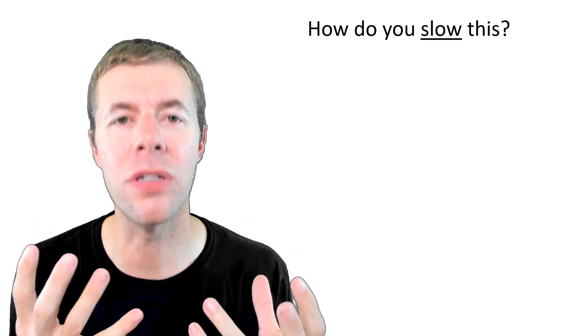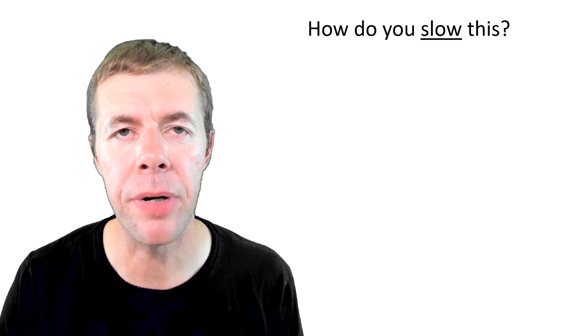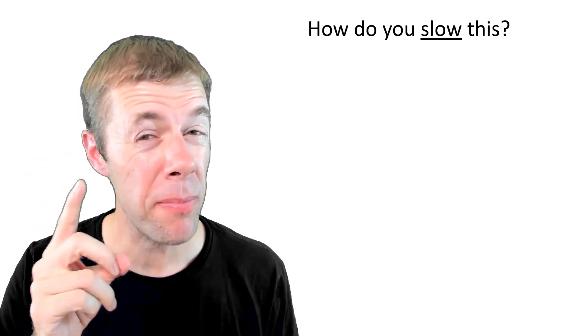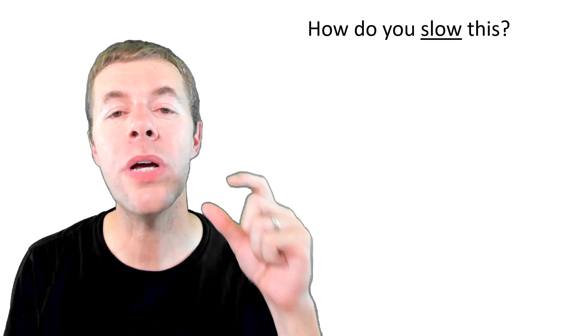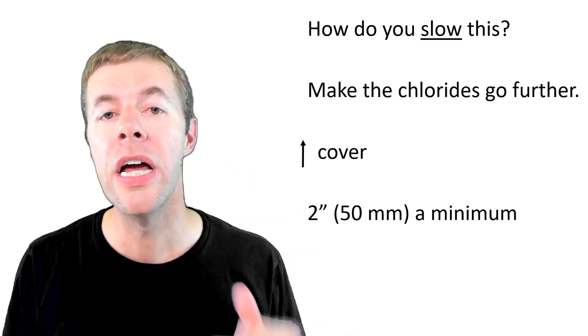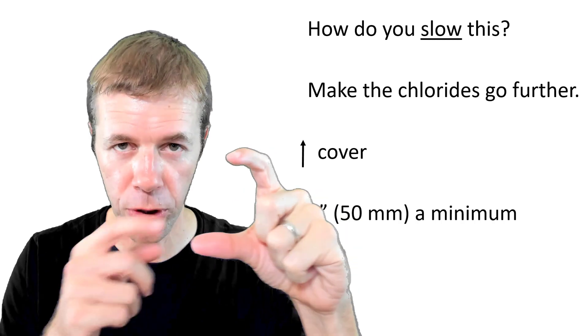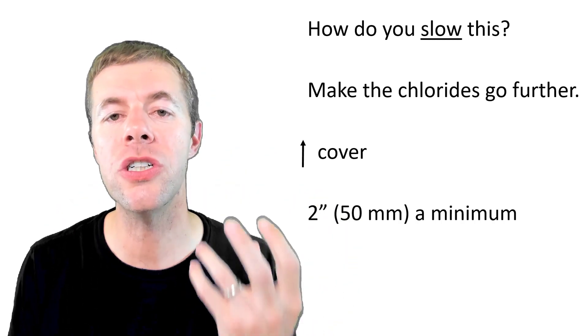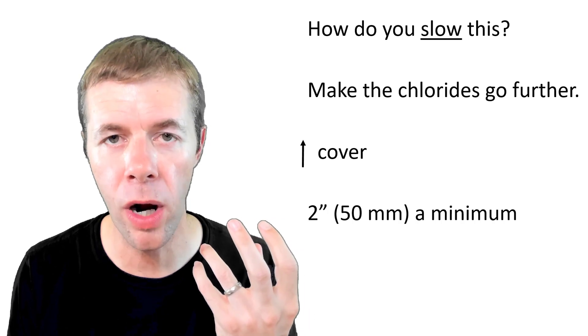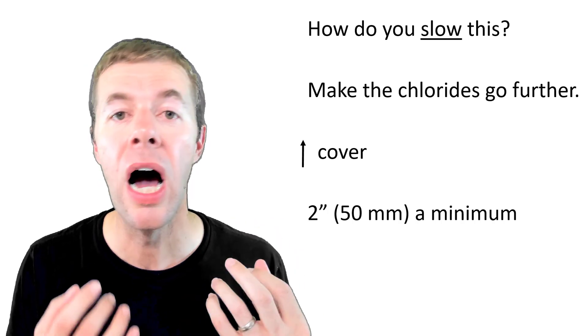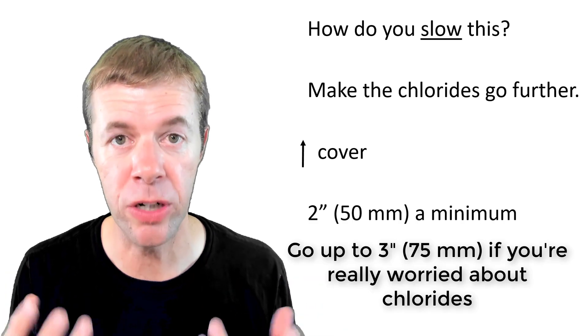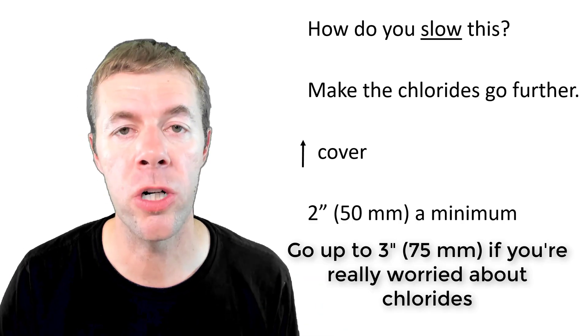So how do you slow this down? How do you stop this from happening? Well number one, the easiest, the cheapest, probably the best way is to increase your cover. Cover is the distance between the reinforcing steel and the surface of your concrete. You need two inches minimum if you're worried about chlorides. That's 50 millimeters. I would bump that up to maybe three inches or 75 millimeters if you're extremely concerned about chlorides.